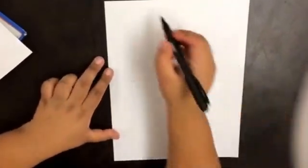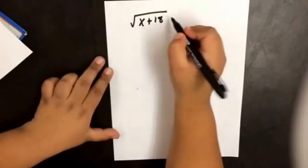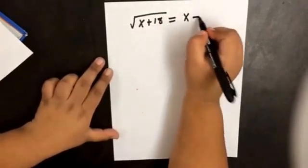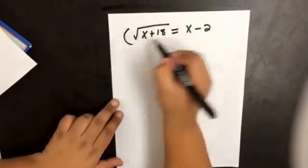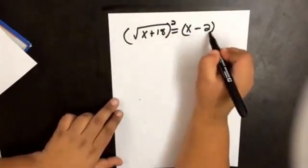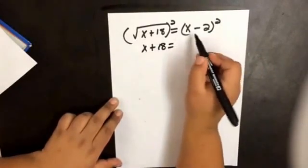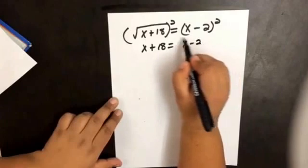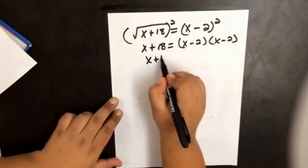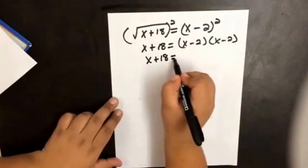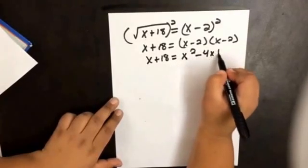What if we have the square root of x plus 18 equals x minus 2? We want to get rid of the radicals, so I'm going to square both sides. So then x plus 18 equals x minus 2 times x minus 2, which is going to give us x squared minus 4x plus 4.